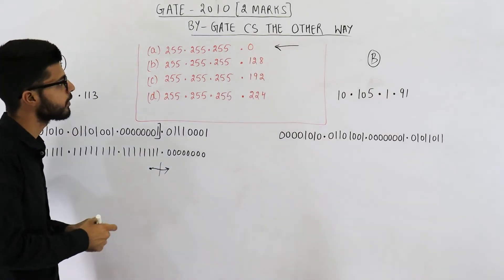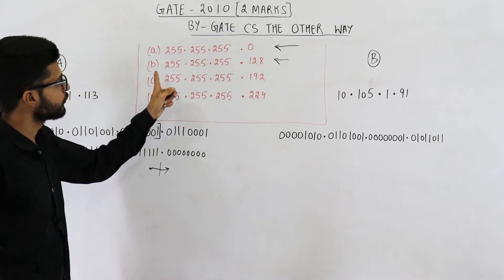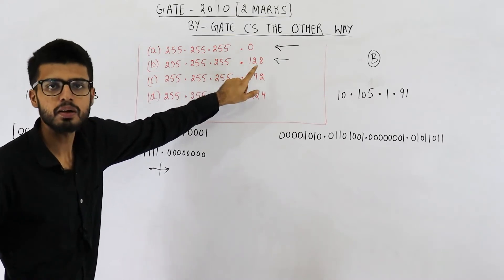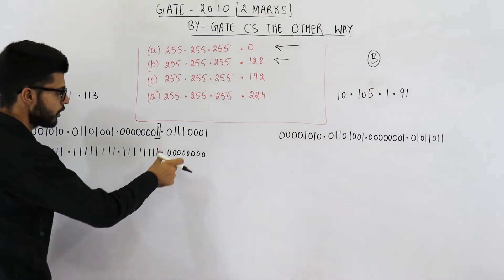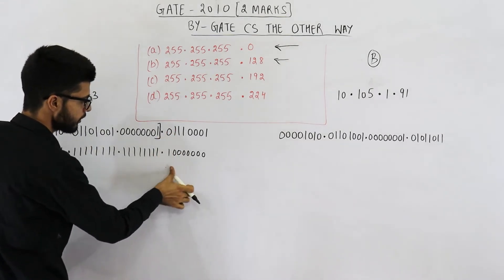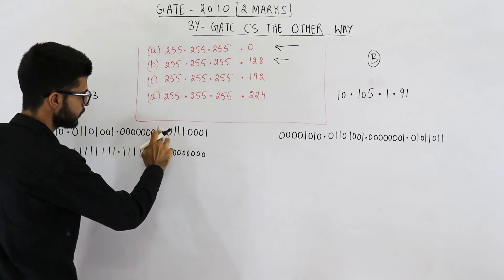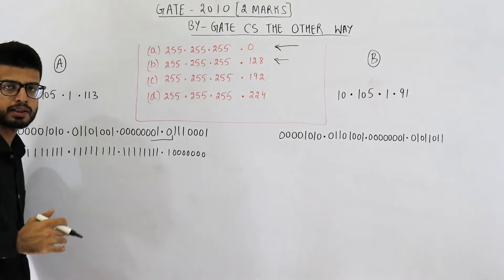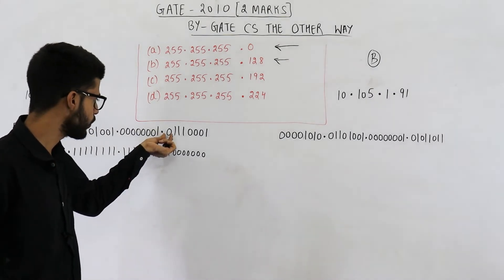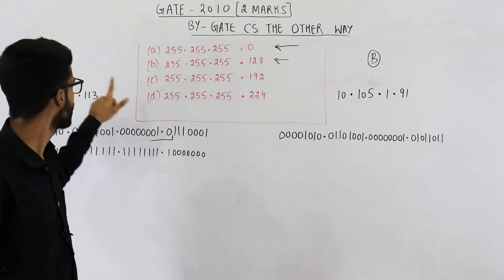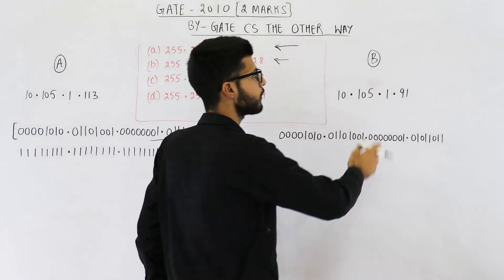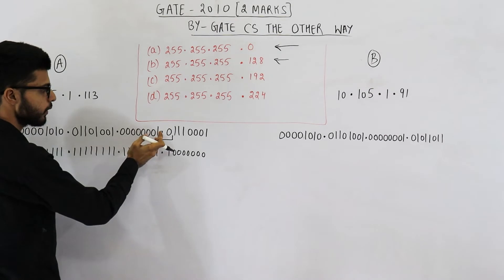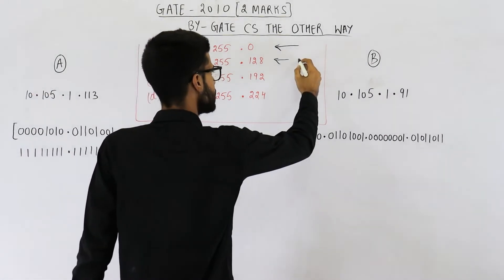Now let us analyze option B. Option B says the first three octets along with the first bit of the next octet form the network ID. What is 128? 128 is one followed by seven zeros, so we have a one here. That means the network ID extends one more bit into the fourth octet. Already the first three octets are exactly matching, and this one additional bit is zero for A as well as zero for B, so the network ID is still the same — 25 bits matching for both A and B. This will also work.